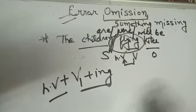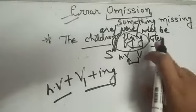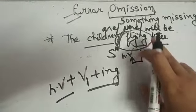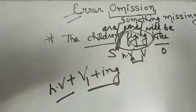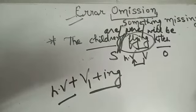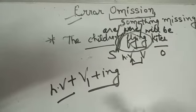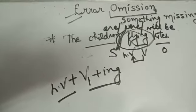We can write this sentence either in present, past or future continuous. In continuous tenses we use first form plus ing. So here you can write the children are flying kites, the children were flying kites or children will be flying kites. This way you have to find the missing word and write the word. This is all about error omission.